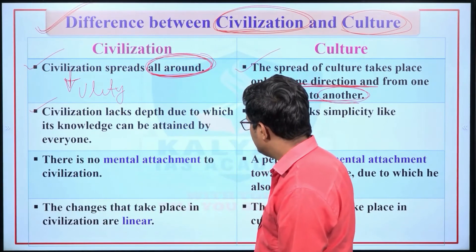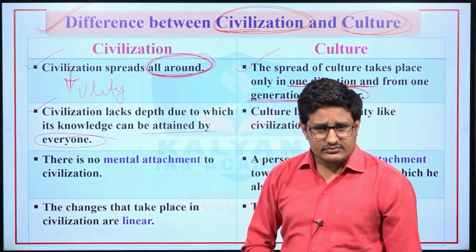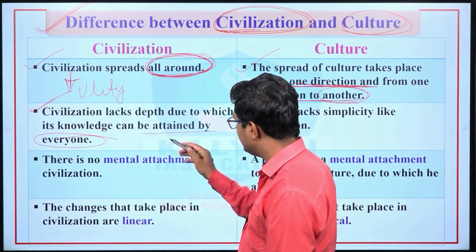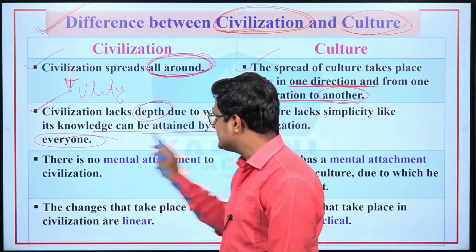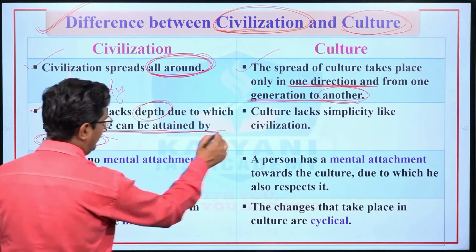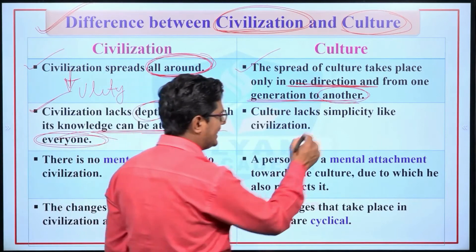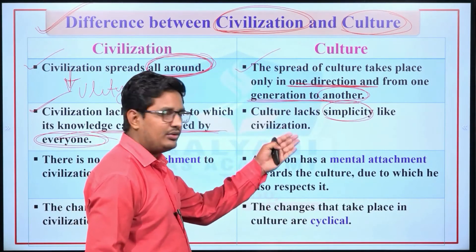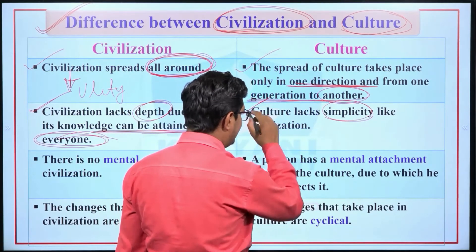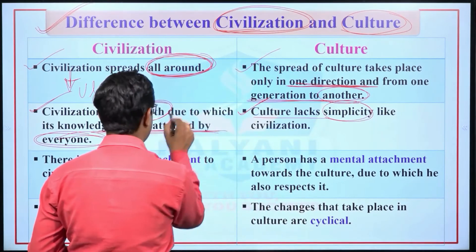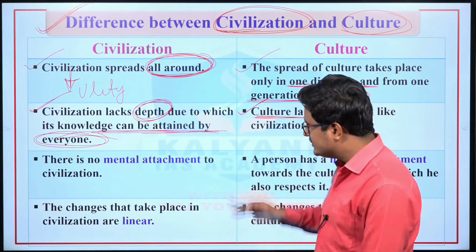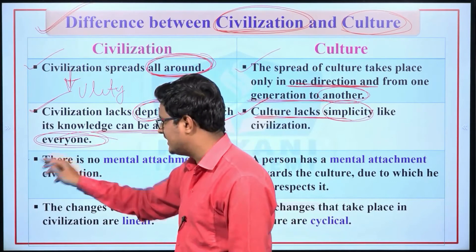Second difference: civilization lacks depth, due to which its knowledge can be attained by everyone. Civilization fulfills human needs through material things, which have less depth, so its knowledge is easily attained by anyone. Whereas culture lacks simplicity — it includes non-material aspects such as art, literature, science, religion, etc., and has depth. So culture is not easily understood, while the knowledge of civilization can be easily attained by anyone.